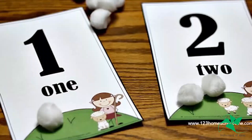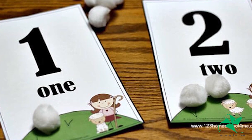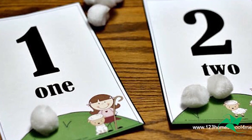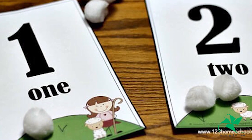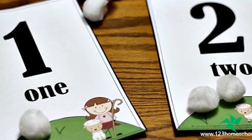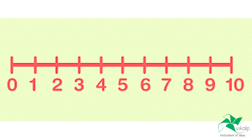Conventionally, children learn to recognize numbers through rhyme, flashcards, and number charts. Gradually, they learn to recite numbers and also recognize the symbol of numbers. They acquire the skill to recognize numbers but often lack the conceptual understanding of relating numbers with their value and position in the number system.